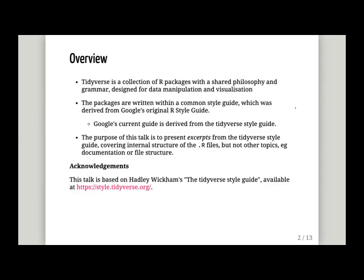As many of you would know, Tidyverse is a collection of R packages with a shared philosophy and grammar, designed for data manipulation and data visualization. All these packages are written within a common style guide, which was derived from Google's original R style guides, which in turn is now based on the current Tidyverse style guides with some modifications. What I'm going to present today is just some extracts from the style guide. I'm not going to talk about all of it — partly not because I disagree with some parts, but because covering all of it would be quite time consuming. I'm going to concentrate on the internal structure of R files. It also covers topics like documentation, file and folder structures, and so on.